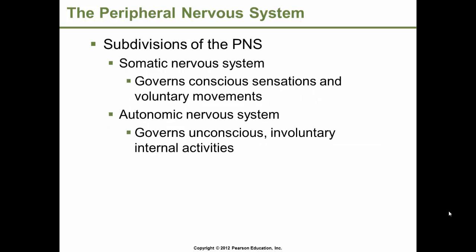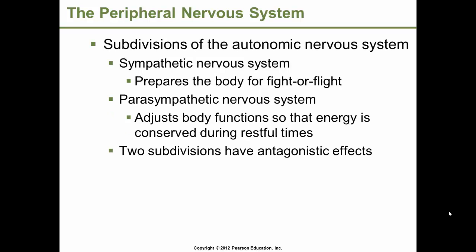Subdivisions of the peripheral nervous system include the somatic and autonomic. The somatic governs conscious sensations and voluntary movements, while the autonomic governs unconscious, involuntary internal activities. The somatic nervous system sends information about conditions within the body to the autonomic nervous system, which then makes appropriate adjustments. The sympathetic division prepares the body for fight or flight in emergency situations, while the parasympathetic adjusts body functions to conserve energy during restful times.